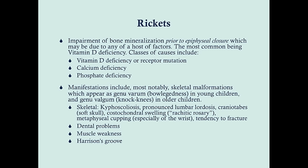There are various classes of causes, which will be reflected in the labs and in the physiology. You can have a vitamin D deficiency, which is the most common cause, or a vitamin D receptor mutation, which is a congenital issue. You can also have a calcium deficiency or a phosphate deficiency — and it's the phosphate deficiencies that make up a lot of the congenital causes of rickets.